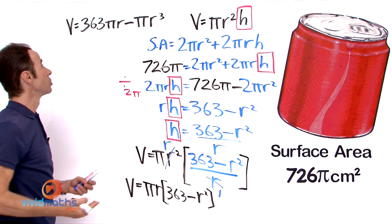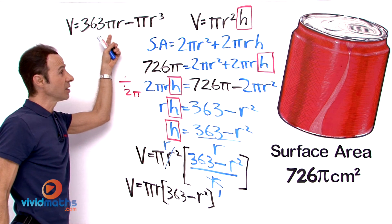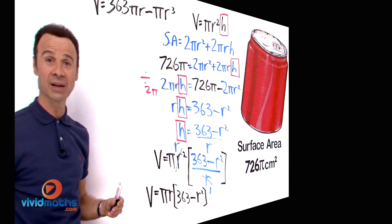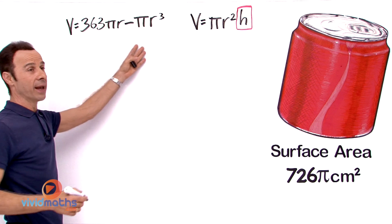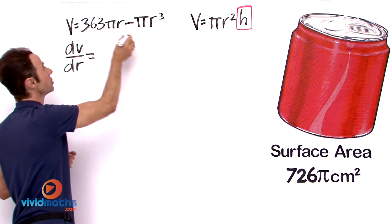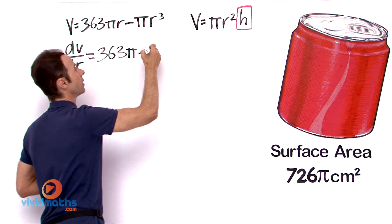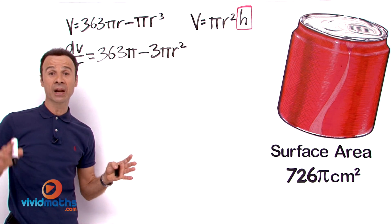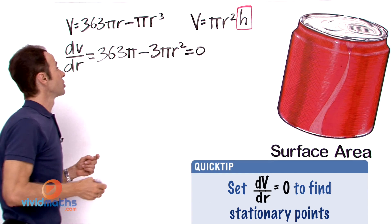Now that we have organised the formula, let us differentiate. Starting from V = 363πr − πr³, we find the first derivative dV/dr: the first term differentiates to 363π, and bringing the 3 to the front on the second term gives −3πr². So dV/dr = 363π − 3πr². To find a maximum or minimum, we set this equal to zero at the stationary point.